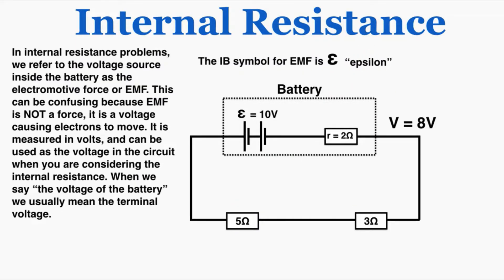In internal resistance problems we refer to the voltage source inside the battery as the electromotive force, or EMF. This can be confusing because EMF is actually not a force — it's a voltage causing electrons to move. It's measured in volts and can be used as the voltage in the circuit when you are considering the internal resistance. When we say EMF, we mean that full total voltage inside of the battery, whereas when we just use the word voltage, we're usually referring to the terminal voltage. The IB symbol for EMF is epsilon — a lowercase epsilon specifically, a Greek letter. In this problem, the EMF epsilon is equal to 10 volts, but the terminal voltage is equal to 8 volts.